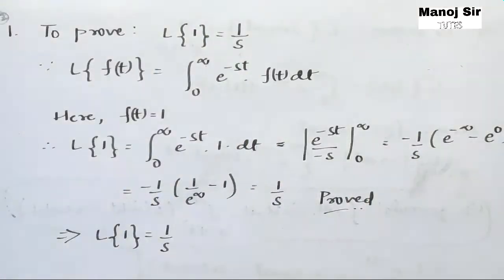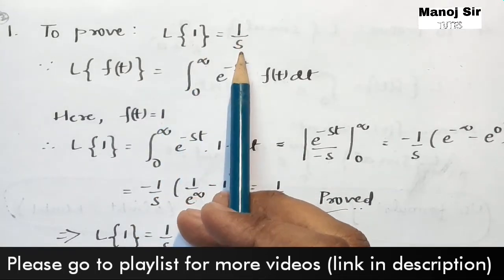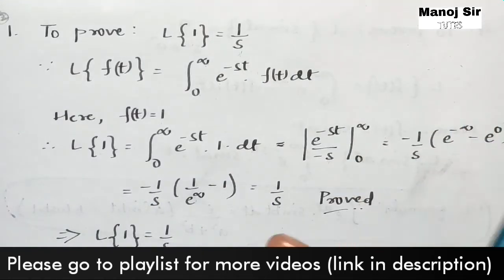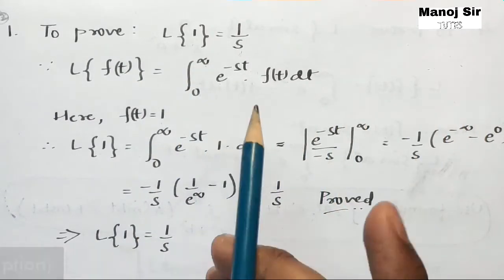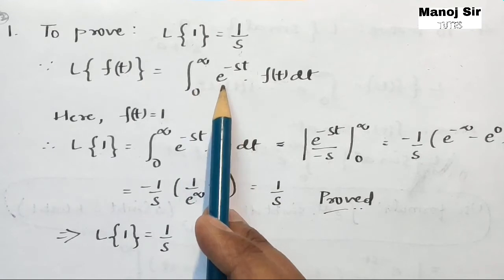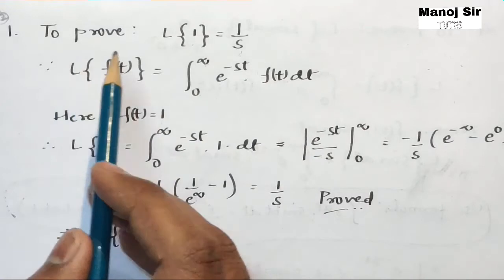In the i-button and in the description box below you will find the complete playlist of Laplace transform. Welcome to video number two. In this video we are going to prove two very important formulae on Laplace transform. The first formula is Laplace of 1 equals 1 upon s, and the second formula is Laplace of e to the power at equals 1 upon s minus a. We will prove both formulae using the general formula of Laplace transform, that is: Laplace of f(t) equals integration from zero to infinity of e to the power minus st into f(t) dt.